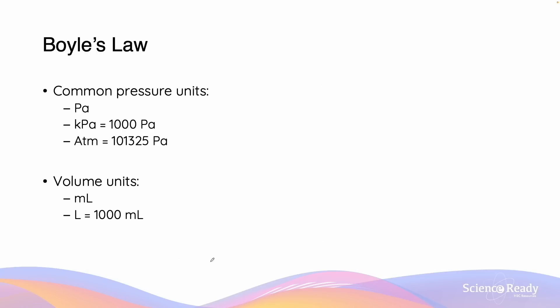Common units which are used for pressure include pascals, which is Pa, kilopascals, which is thousands of pascals. An atmosphere is equivalent to 101,325 pascals, or 101.325 kilopascals. This conversion value for an atmosphere into a pascal needs to be remembered.